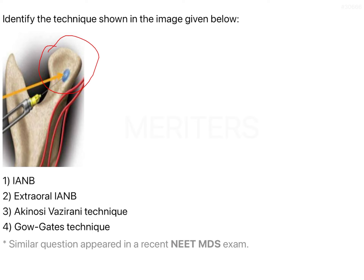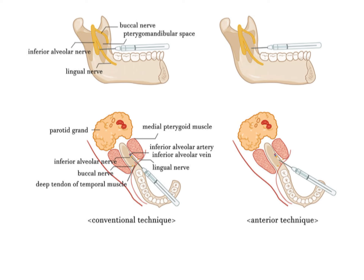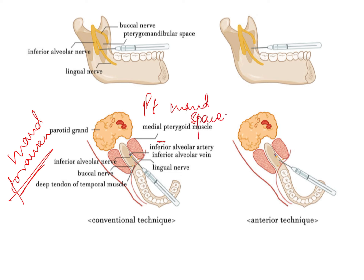Before we go into the answer, let's look at the different types of mandibular nerve block or inferior alveolar nerve block. In the traditional or conventional IANB, the local anesthetic is deposited in the region where the inferior alveolar nerve enters the mandibular foramen. You take your needle, pierce the buccinator muscle, go into the pterygomandibular space, and deposit the local anesthetic lateral to the medial pterygoid muscle, just at the entrance of the nerve into the mandibular foramen.